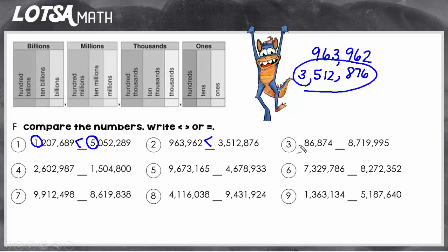So let's look at number three. Again we have a five digit number and we're comparing it with a seven digit number. Well if you only have five digits and you have seven digits you know that the seven digit number is going to be bigger. So eighty six thousand eight hundred seventy four is less than eight million seven hundred nineteen thousand nine hundred and ninety five.